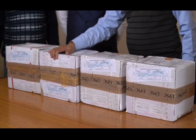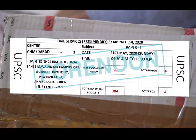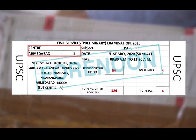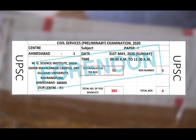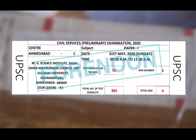These packets assigned to the venue will have the name of the center, address of venue, test booklets or question-come-answer booklets in the box, total number of test booklets in the venue, box number, and total number of boxes.